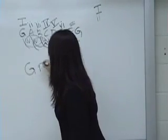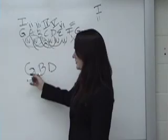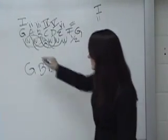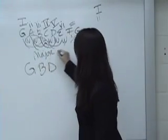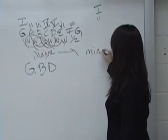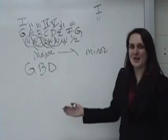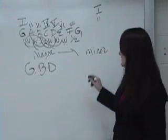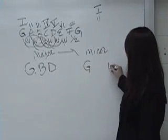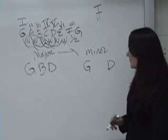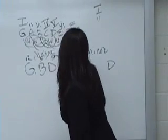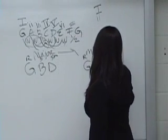If a G, B, D chord is a G chord, if that's a major chord, how do I make it into a minor chord? Well, as I told you, the outside stays the same. The bread is always the same. We have a G and a D as our root and our fifth. Root, third, fifth. Root, third, fifth.